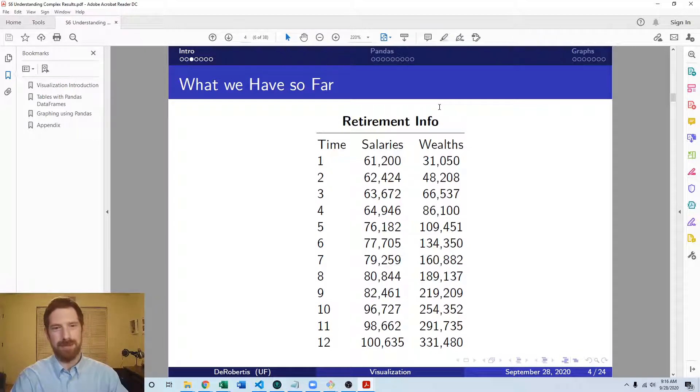Looking at this table, certainly you can look at it and get some conclusions from it. You can see the salaries increasing a little bit year by year, and then when we hit year five we have this jump, representing a raise from a promotion versus the cost of living raises that come every other year.